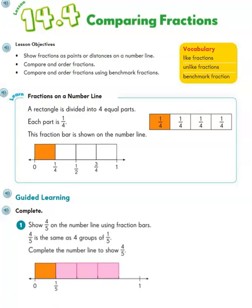Hi guys! So far we have learned all about fractions. We know that fractions are parts of a whole. We know how to find equivalent fractions — we can use a number line, we can use bar models, or we can use multiplication and division. We also know how to find a fraction in its simplest form. Remember that from last time?